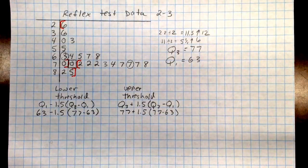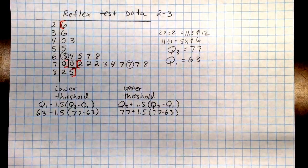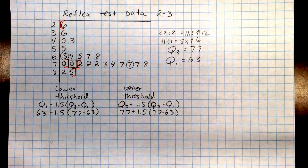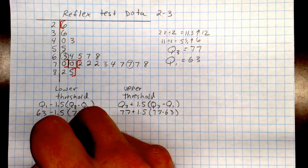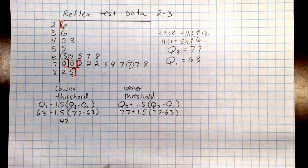Remember, if I'm going too fast, you can always pause this. You can use your calculators to figure that out. And I believe the lower threshold ends up being 42. The upper threshold is 98.